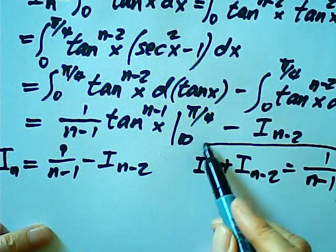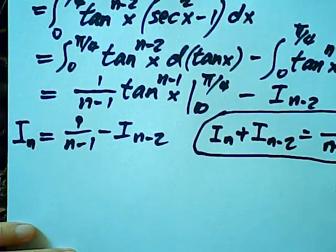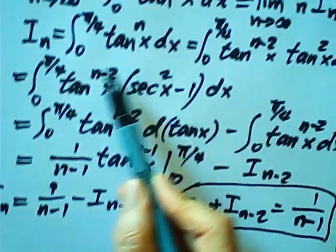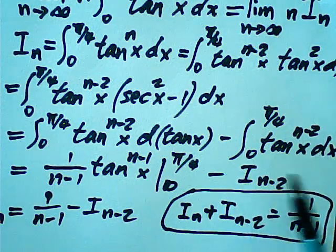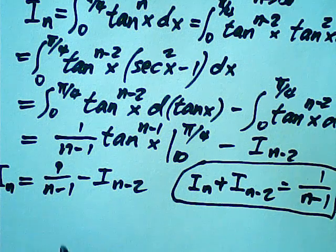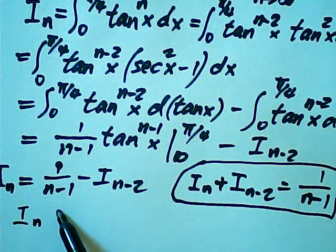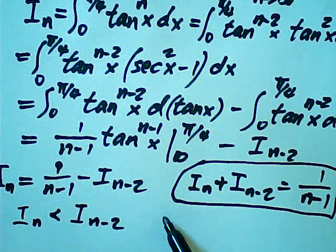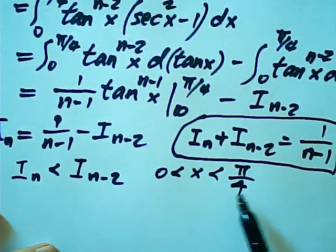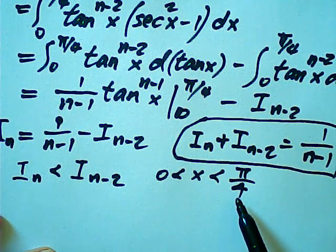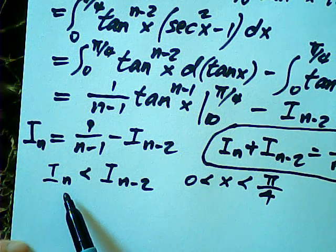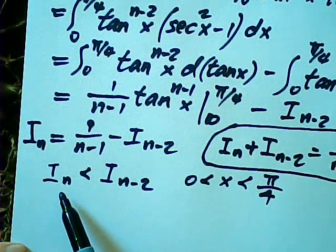That is an important result for our further discussion. Now, I sub n is less than I sub (n-2), for x between 0 and quarter pi. Why? Because when x is less than quarter pi, the tangent is less than 1. For a number less than 1, the higher power is less than the lower power. So tangent^n(x) < tangent^(n-2)(x) throughout this interval — this is the reason.